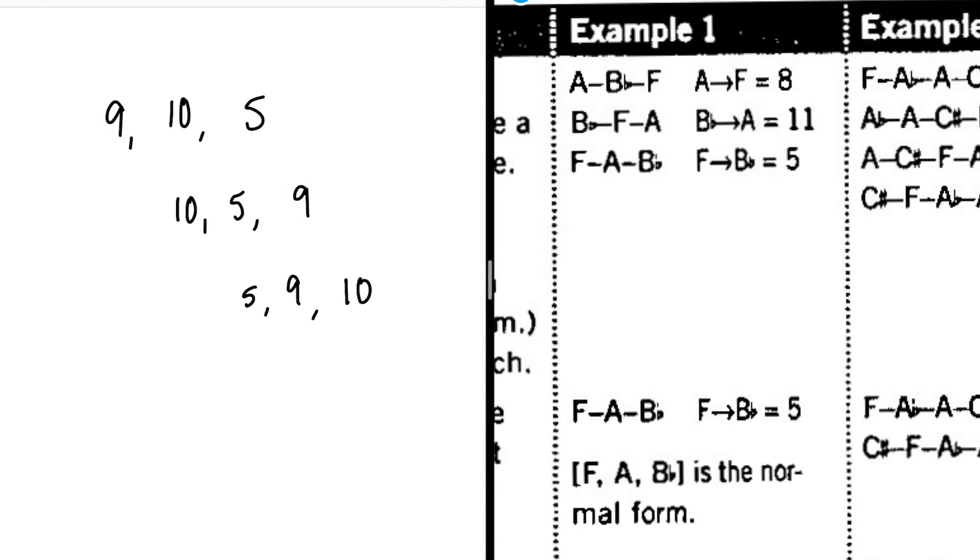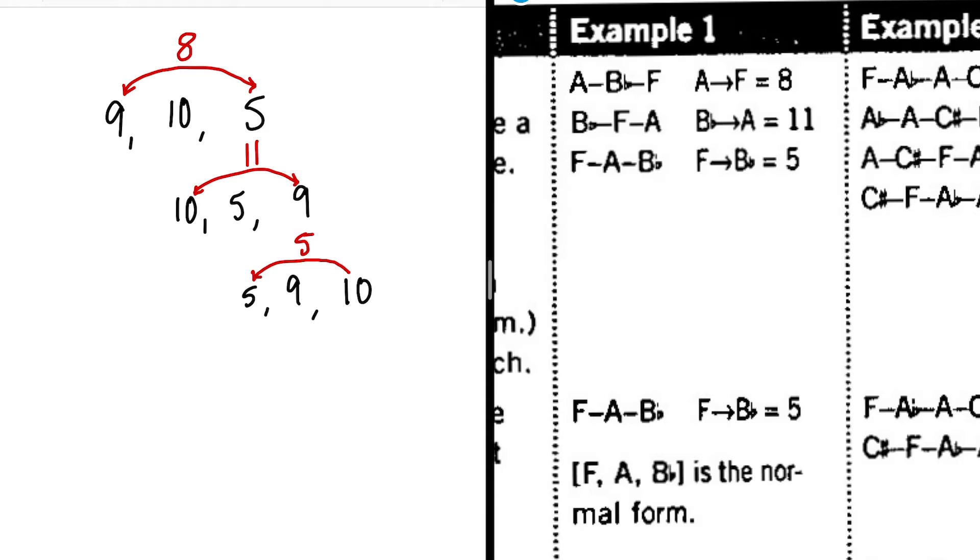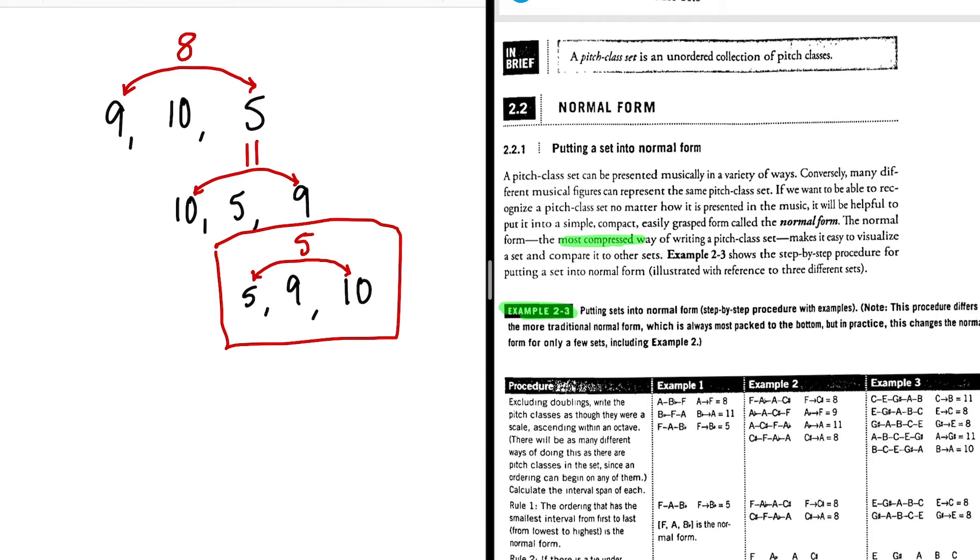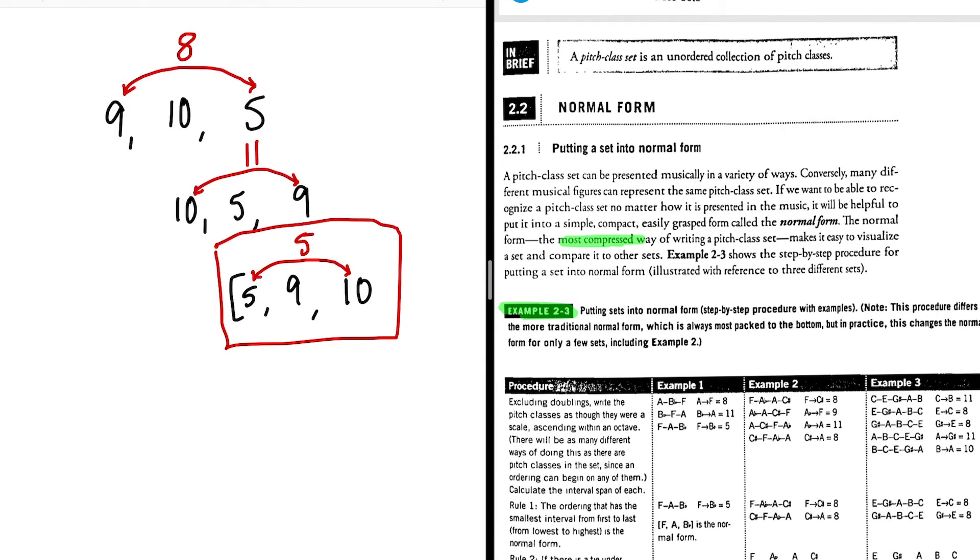Now let's compare the outer intervals. Nine to five is an interval of eight. Ten to nine is an interval of eleven. And five to ten is an interval of ten. So because this has the smallest outer interval, it is the most compressed way of writing the pitch class set. So this is the normal form. And because it's the normal form, we put it in square brackets.